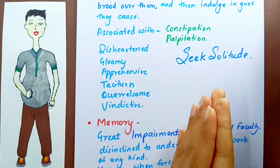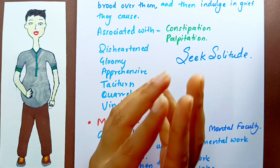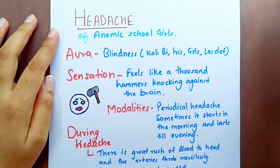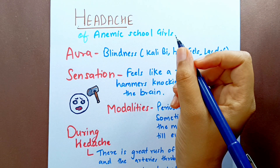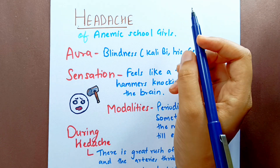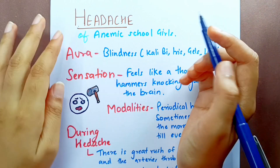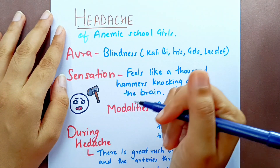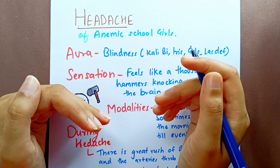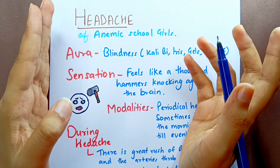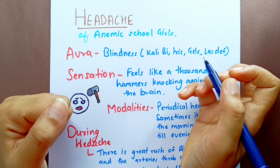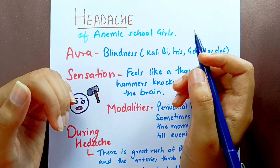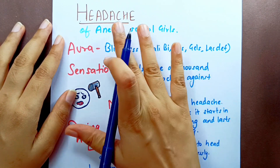Moving on to the headache of Natrium Muriaticum, which is an important sphere of action. The classic presentation is headache of anemic school girls — adolescent-aged girls who have anemia and complain of headache may present with a picture of Natrium Muriaticum.